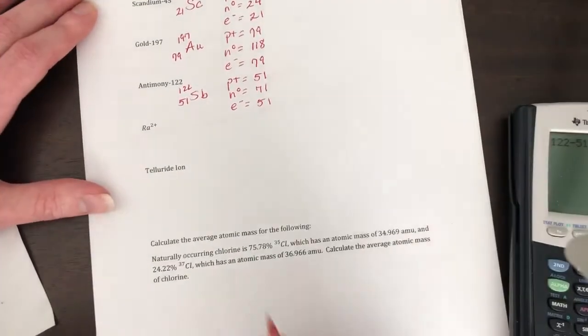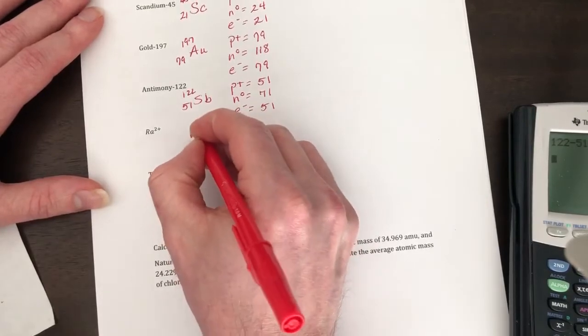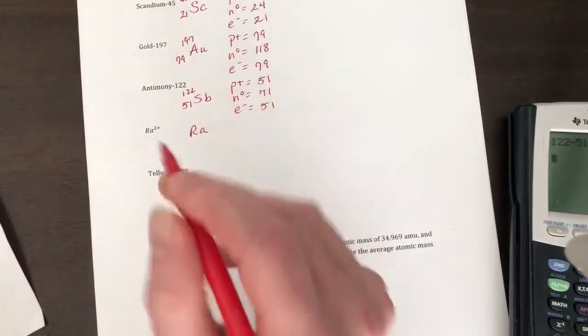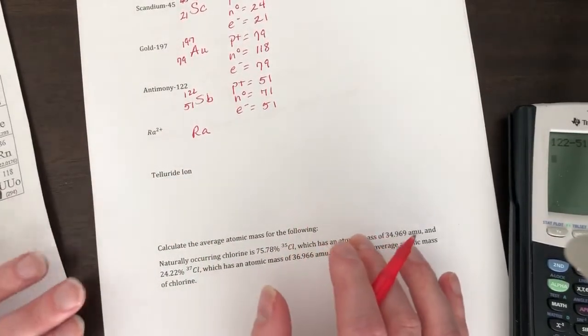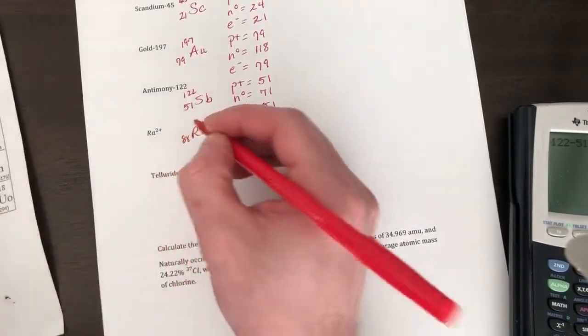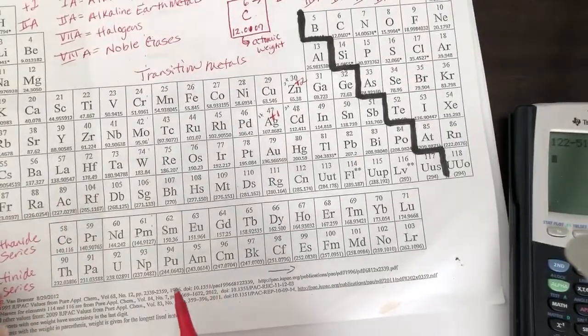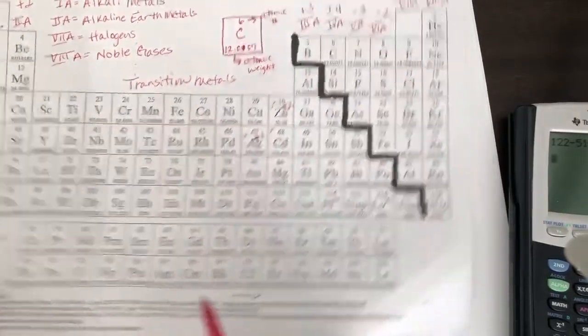Okay, so next one, radium. Symbol for radium is RA. Its atomic number is 88. So it's right here, 88, and its atomic mass is gonna be 226.